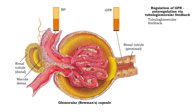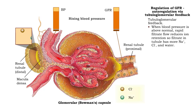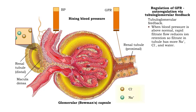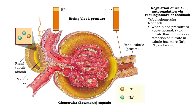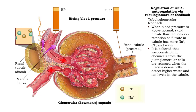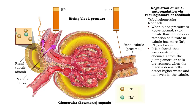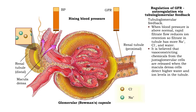The second mechanism is tubuloglomerular feedback. When blood pressure is above normal, rapid filtrate flow reduces ion retention so filtrate in the tubule has more sodium ions, chlorine ions, and water. It is believed that when macula densa cells detect higher water and ion levels in the distal convoluted tubule, the release of vasoconstricting chemicals from the juxtaglomerular cells is promoted.